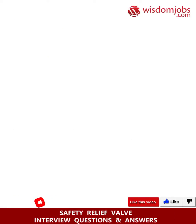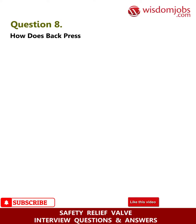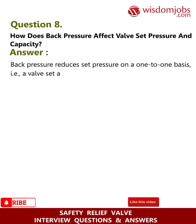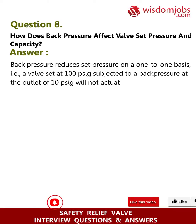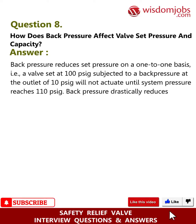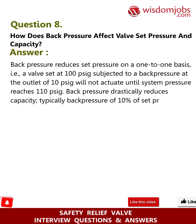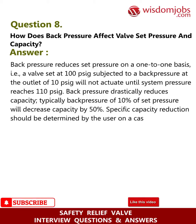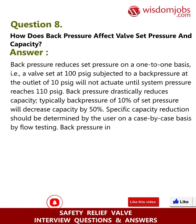Question 8: How does back pressure affect valve set pressure and capacity? Answer: Back pressure reduces set pressure on a one-to-one basis — i.e., a valve set at 100 PSIG subjected to a back pressure at the outlet of 10 PSIG will not actuate until system pressure reaches 110 PSIG. Back pressure drastically reduces capacity; typically back pressure of 10 percent of set pressure will decrease capacity by 50 percent. Specific capacity reduction should be determined by the user on a case-by-case basis by flow testing. Back pressure in excess of 10 percent of set pressure is not recommended.